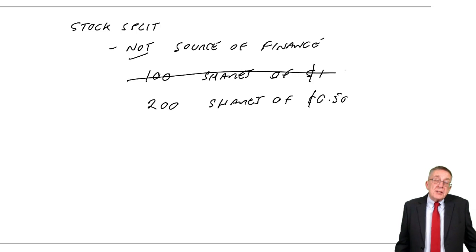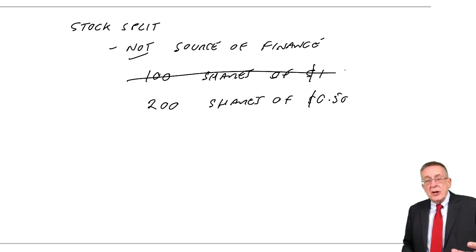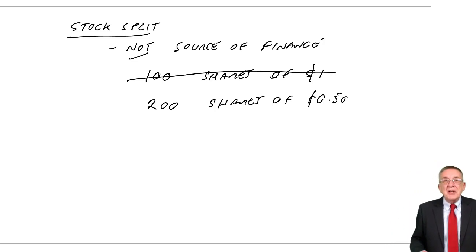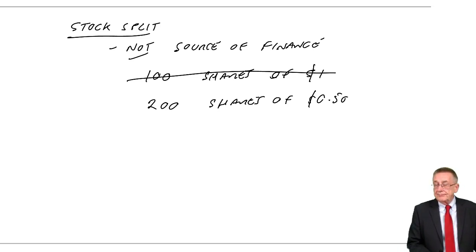Don't worry about that nominal value bit. But they're withdrawing the old ones, issuing new ones. So again, just like a bonus issue, you end up with more shares. A bonus issue, you have 100, you get another 100 of the same share, you've now 200. With a stock split, your existing 100 are cancelled, but you're given 200 instead. So again, it's not a source of finance, but it's a way of reducing the share price on the stock exchange.